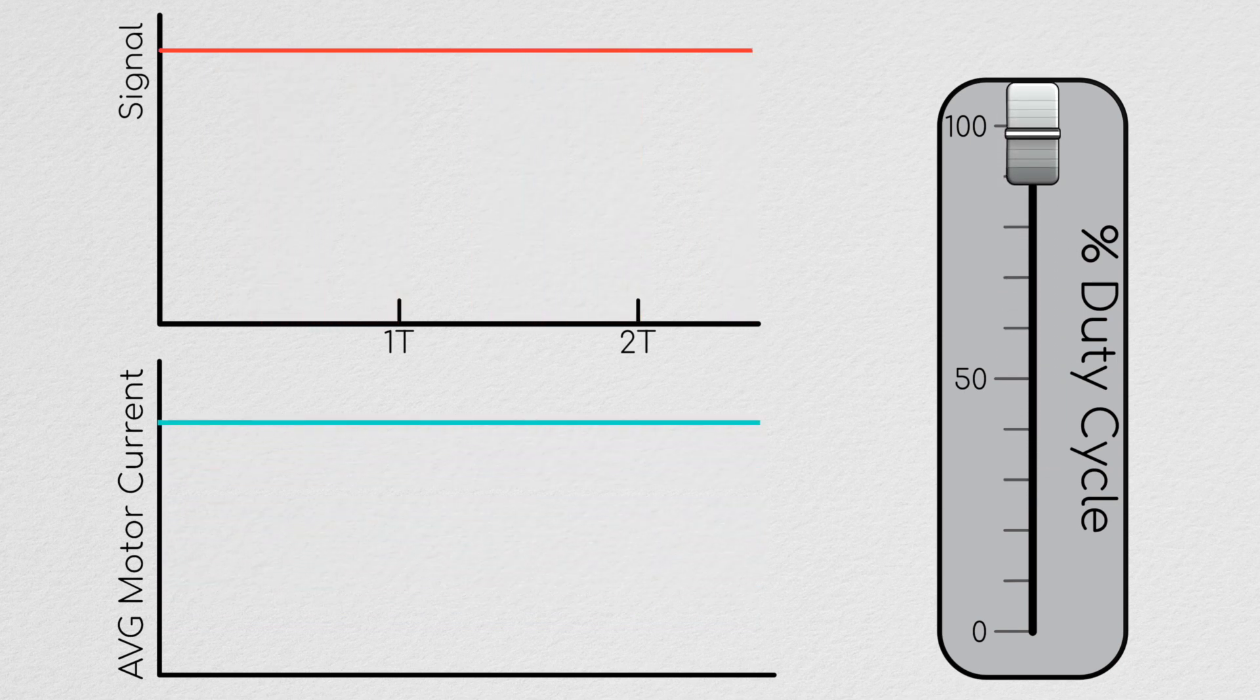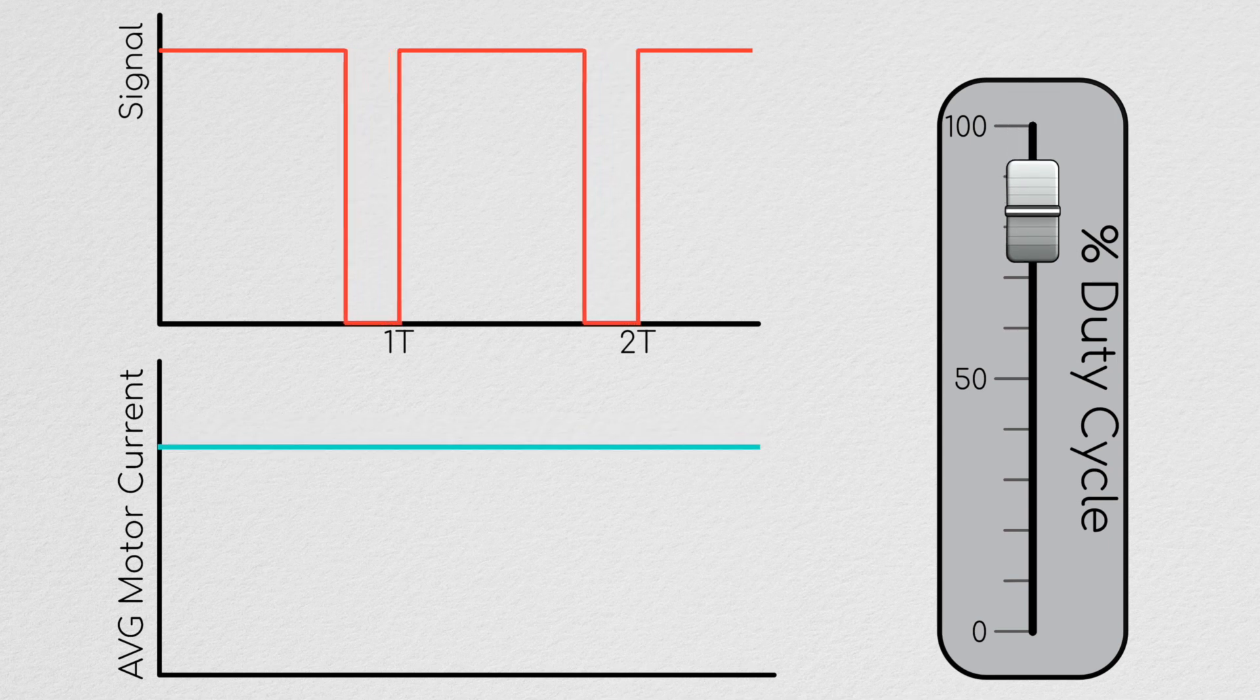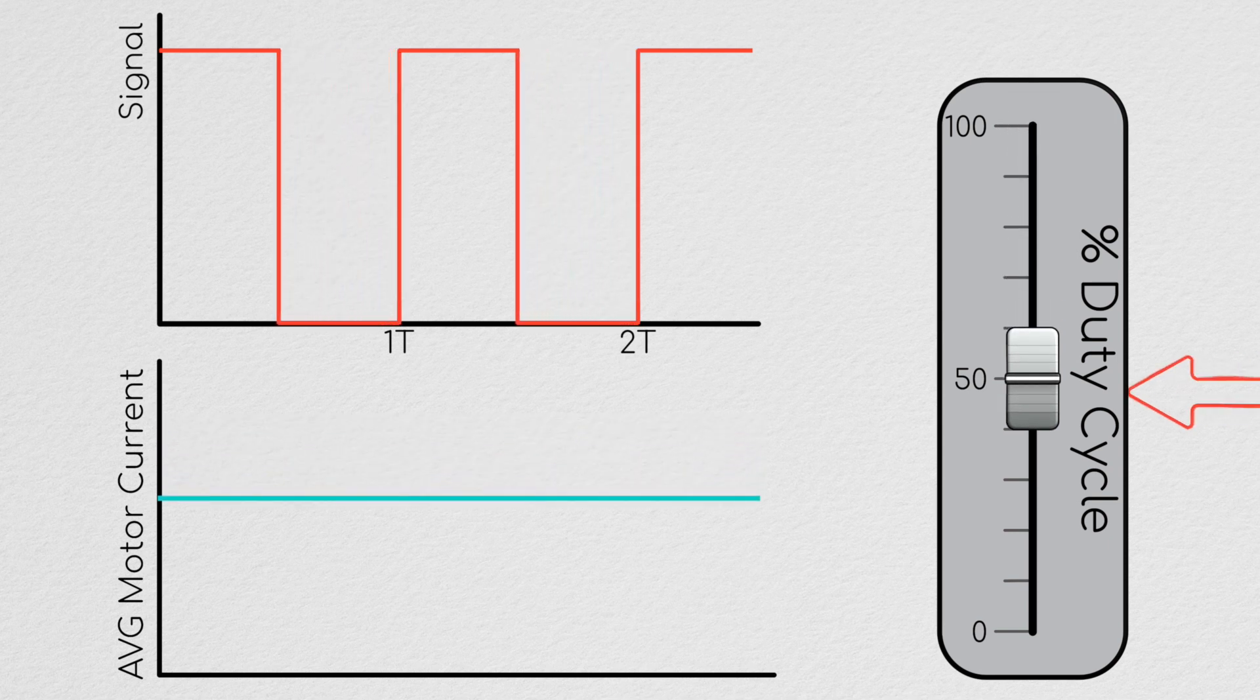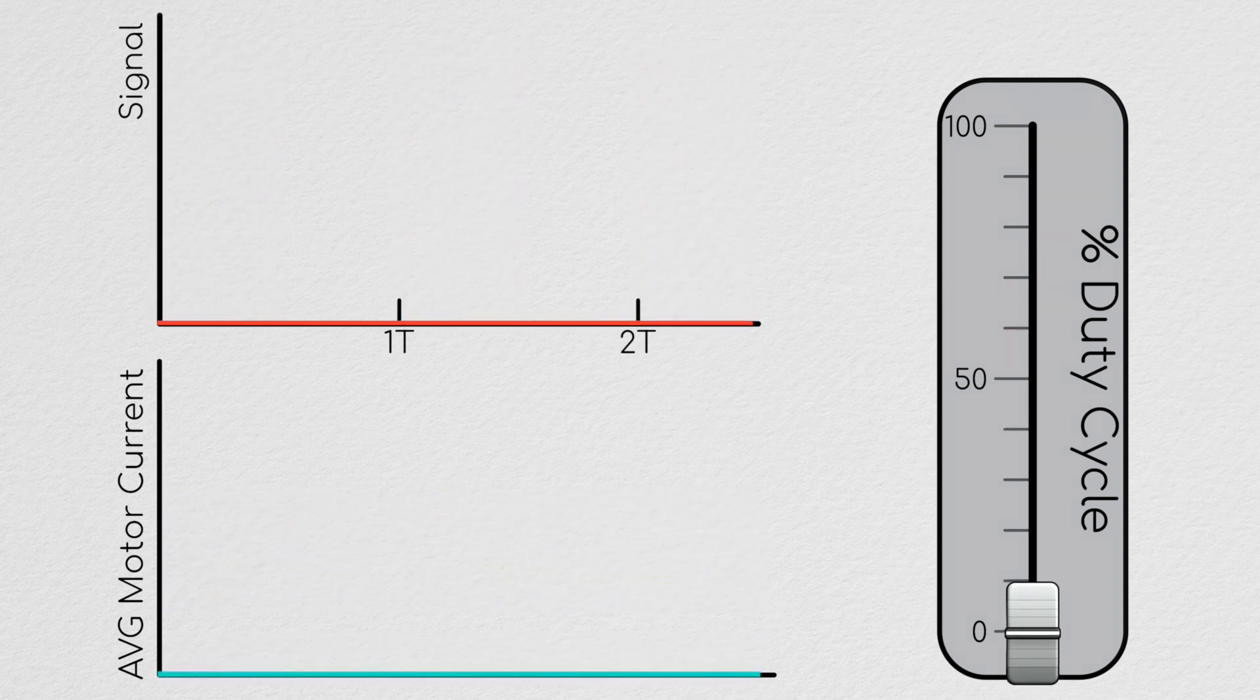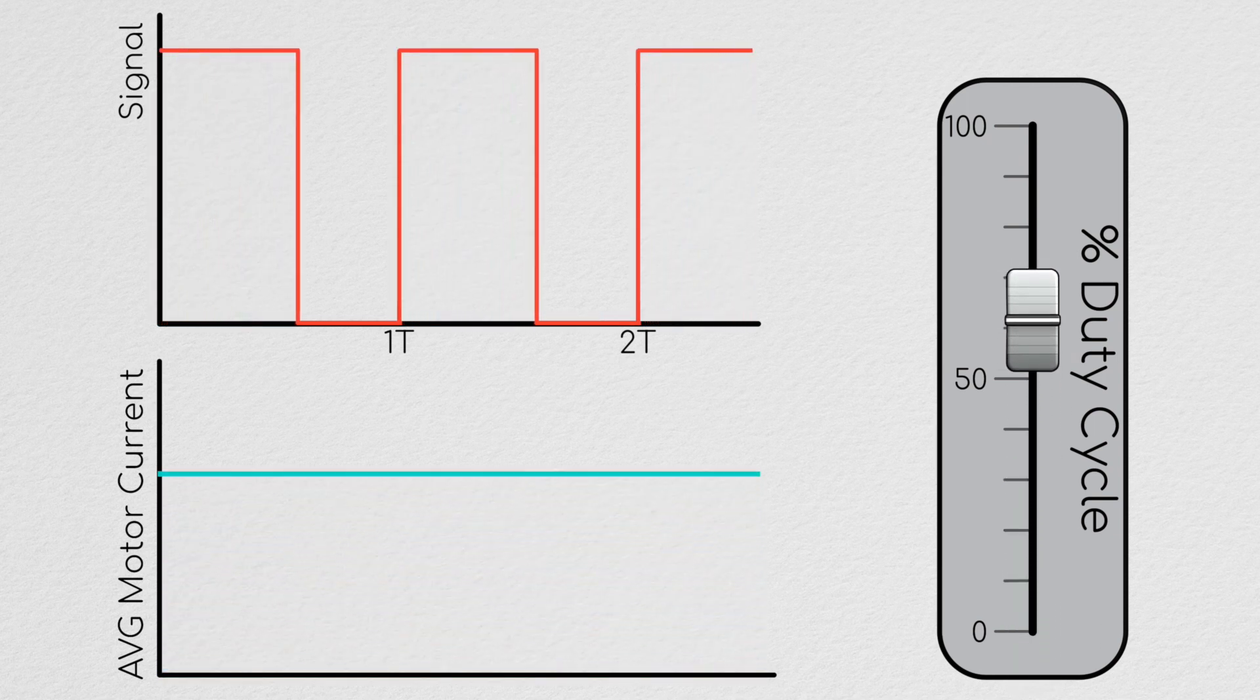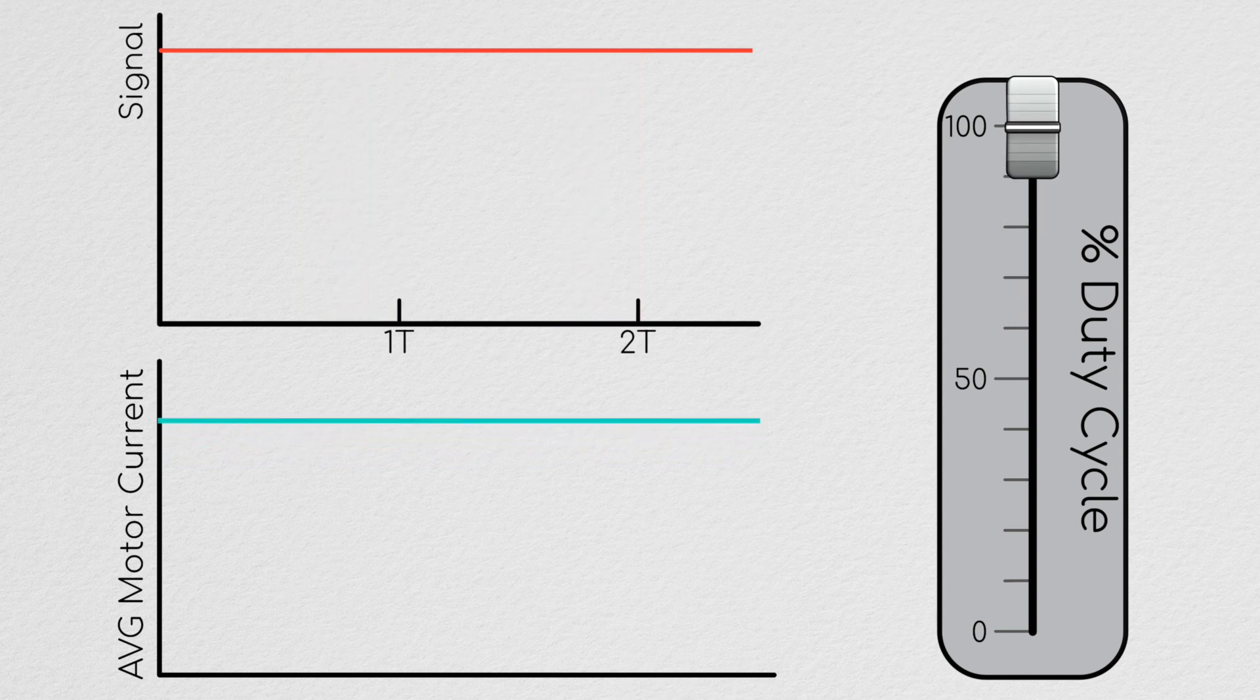The percentage of time that the FETs are written high during a single PWM period is referred to as the duty cycle. By moving the duty cycle between zero and 100%, we can control the current flow between zero amps and the supply voltage divided by the load's resistance.